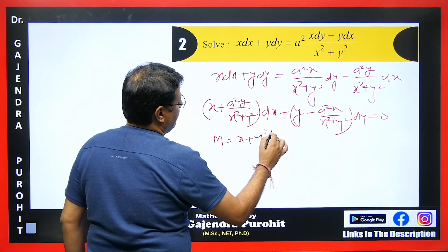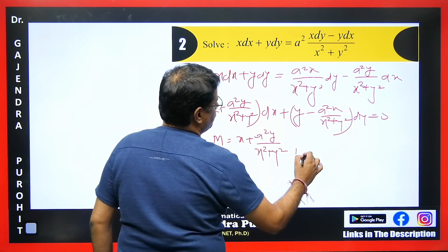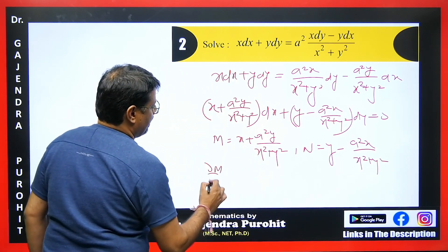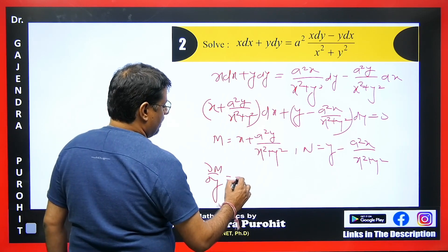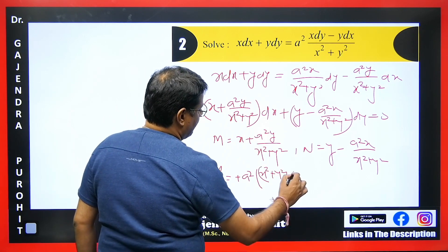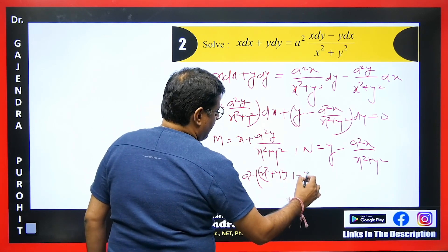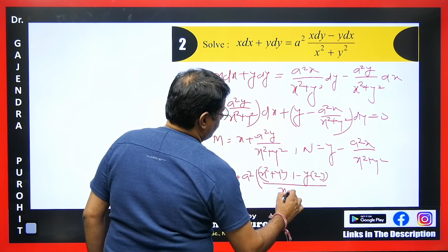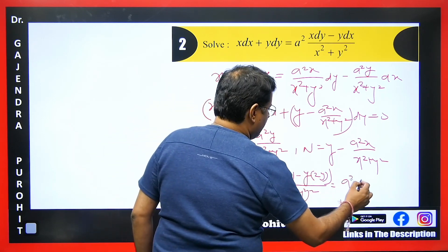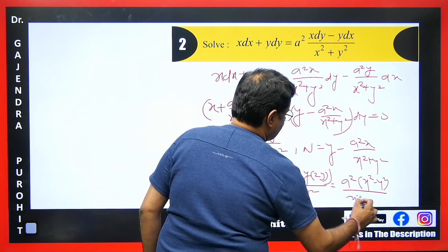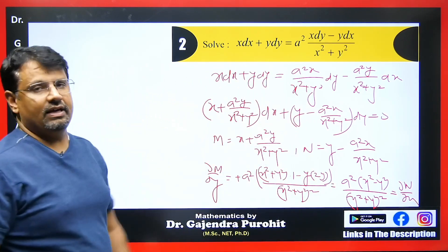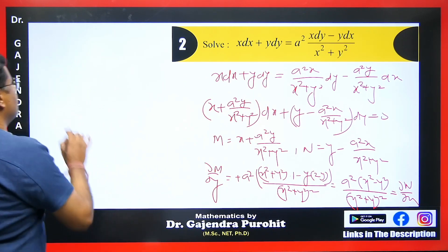We calculate del M by del y using the u/v rule: a²(x² + y² − y·2y)/(x² + y²)² simplifies to a²(x² − y²)/(x² + y²)². Computing del N by del x gives the same result, confirming this is an exact differential equation.